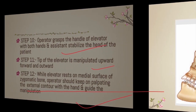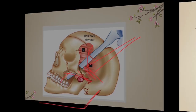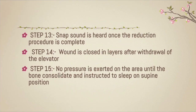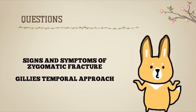While doing this, the operator palpates the external contour of the zygomatic arch to confirm the malar prominence is restored — which is important since this is done almost blindly. Step 13: a snap sound is heard once the reduction is complete. Step 14: the wound is closed in layers after withdrawing the elevator. Step 15: no pressure is applied for 2 to 5 days and the patient is asked to sleep in the supine position.